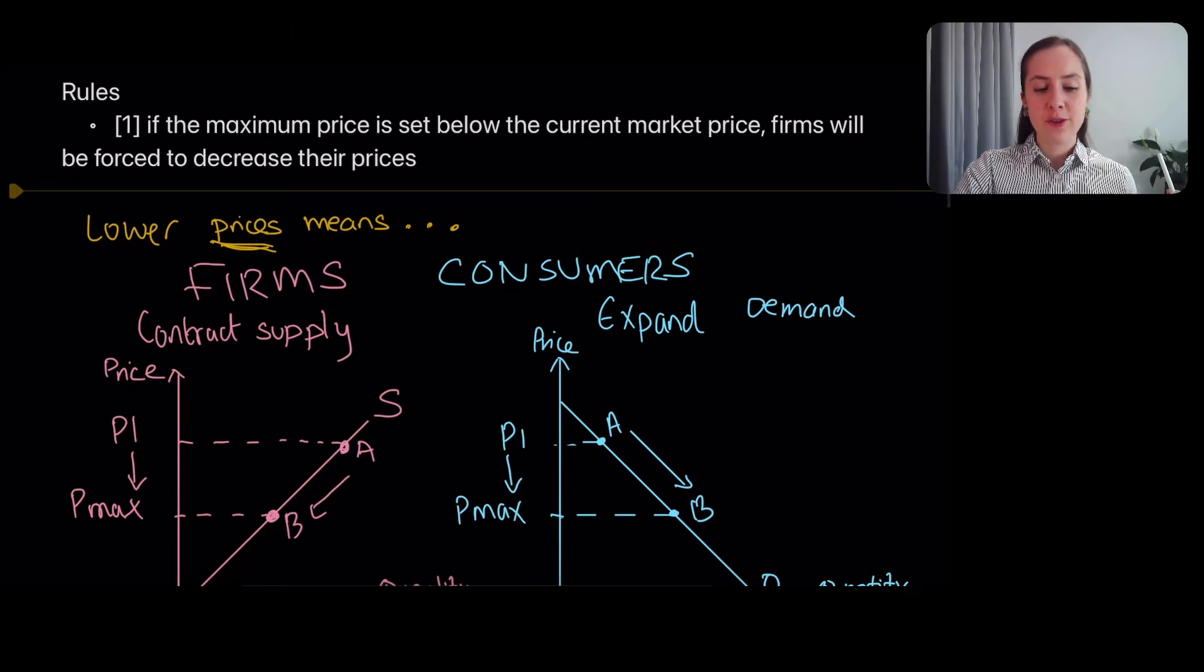A really tricky thing to remember under timed conditions is maximum prices have to be set below the market price for that to change behaviour. So firms have to be forced to lower their prices.